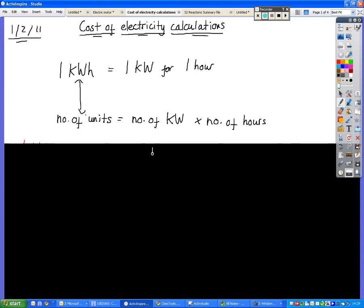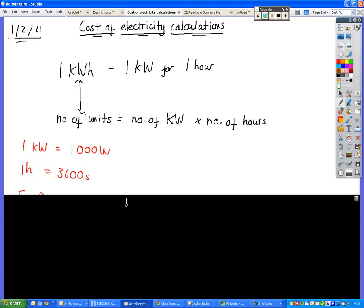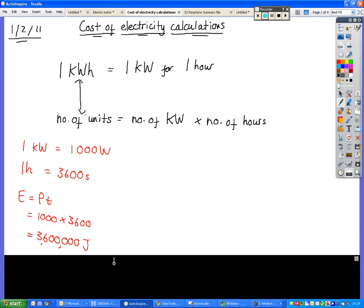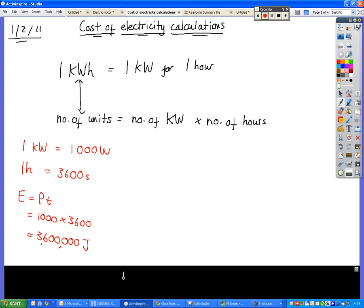We don't use our normal equation for energy because if we do use that, we use energy equals power times time and we take one kilowatt being 1,000 watts, one hour being 3,600 seconds, we get 3.6 million joules of energy just for one kilowatt hour. So it becomes too big a number to work with. That's why we don't bother converting our kilowatts into watts and our hours into seconds because it yields too big a number.